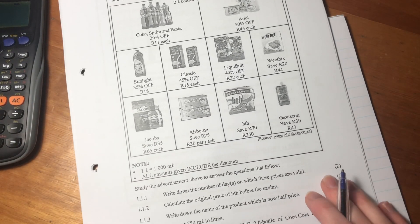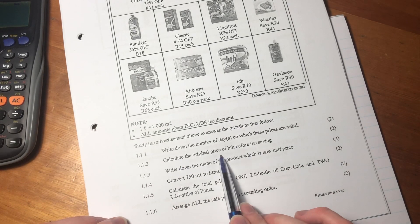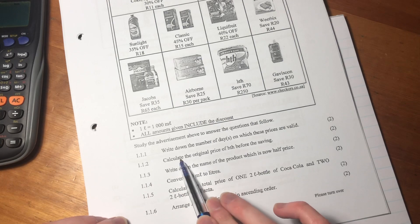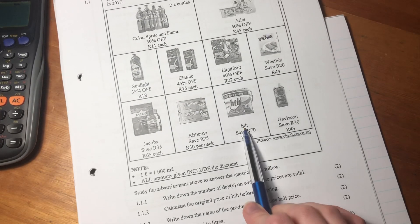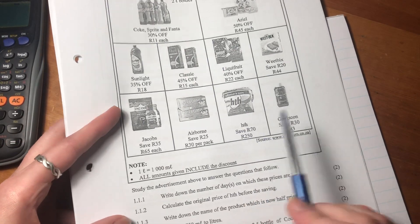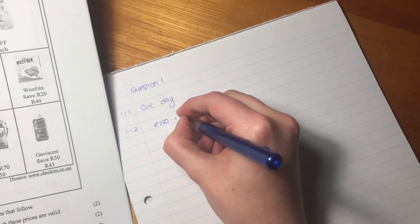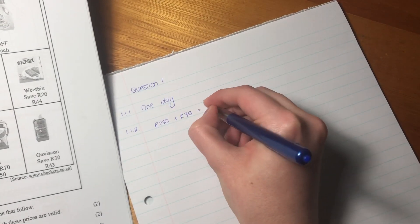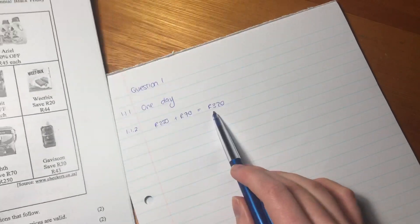Calculate the original price of HDH before the saving. HDH is this pool cleaner. We know that it's 250 now, but we save 70 rand, so we have to add that 70 rand back on to get the original price.